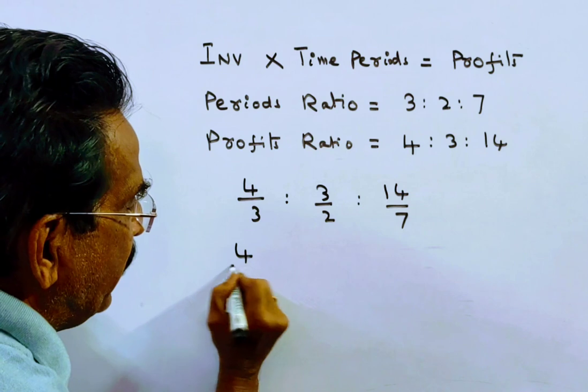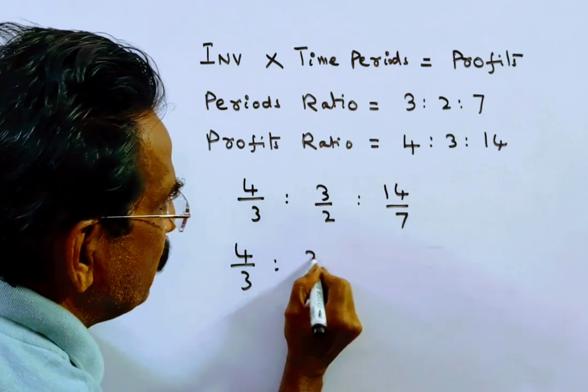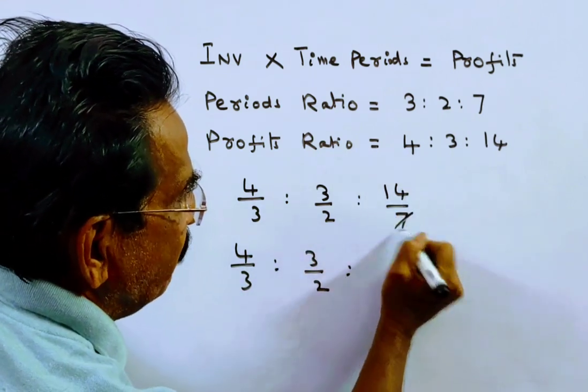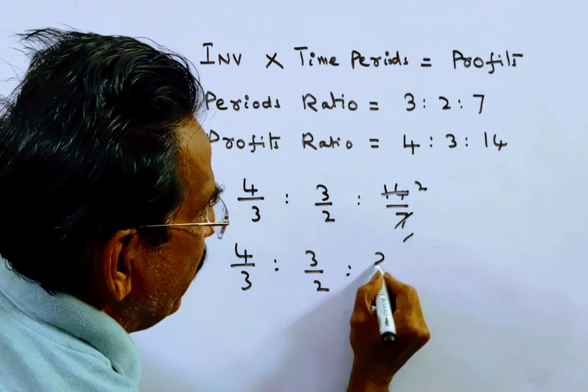So that is 4 by 3 is to 3 by 2 is to 7 ones, 7 twos, 2 by 1.